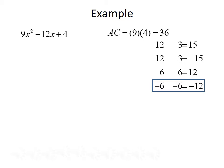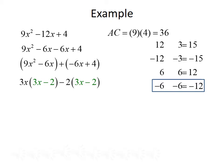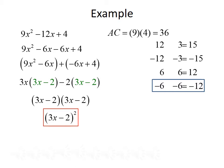We rewrite the trinomial as 9x squared minus 6x minus 6x plus 4. Grouping and factoring: from the first group we pull out 3x, giving 3x times 3x minus 2. From the second group we pull out negative 2, giving negative 2 times 3x minus 2. The common term 3x minus 2 can be factored out to give 3x minus 2 times 3x minus 2, which we rewrite as 3x minus 2 quantity squared. Note we could also have used the perfect squares formula here.